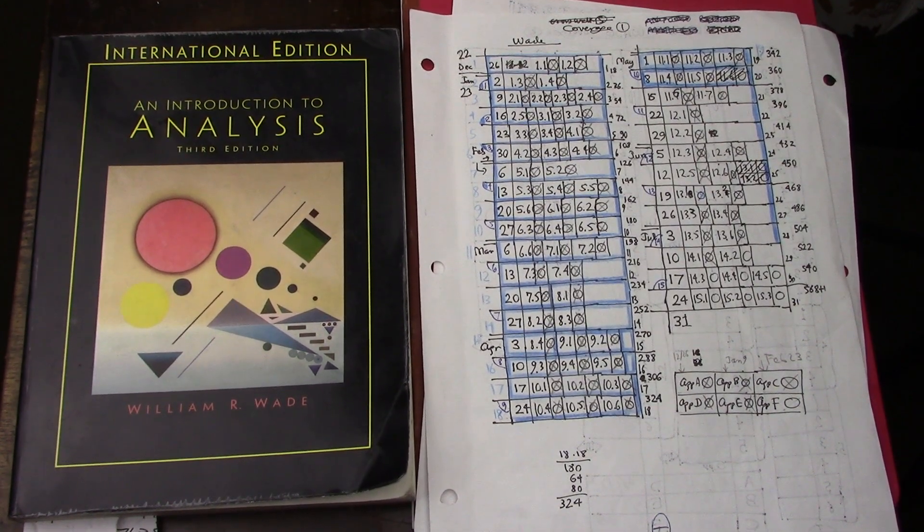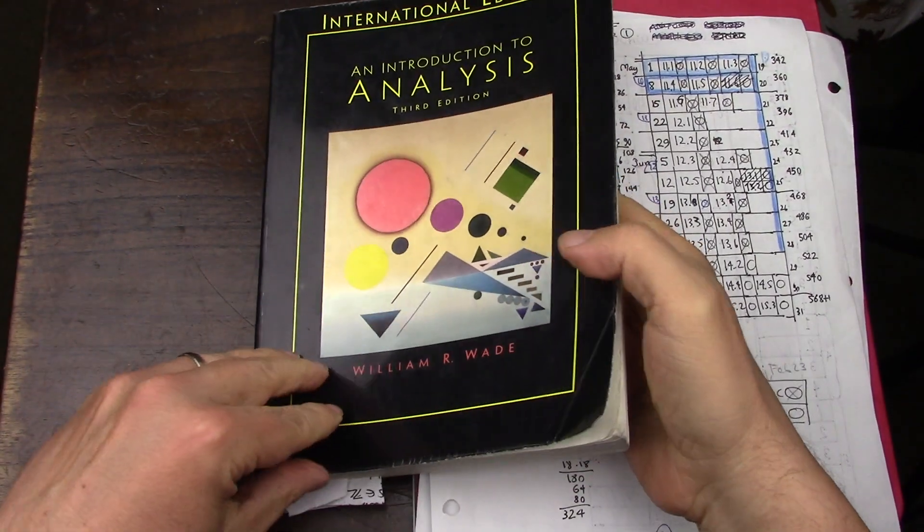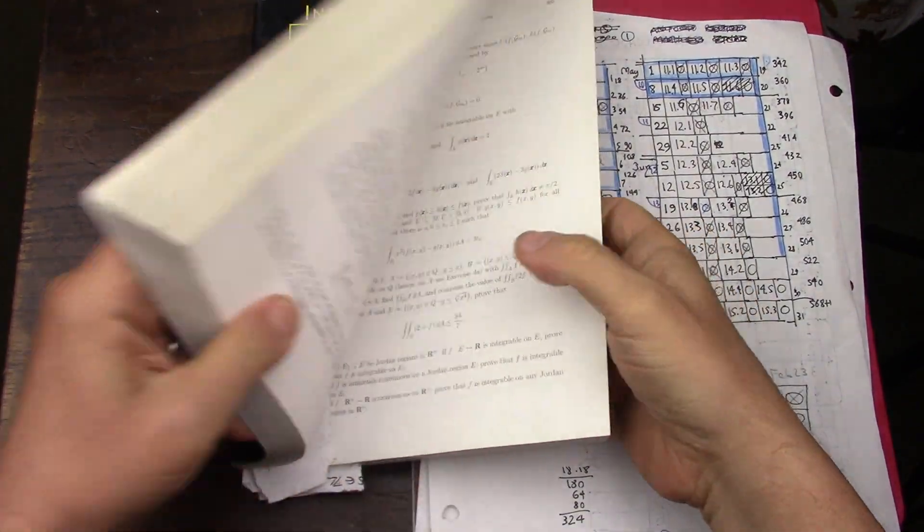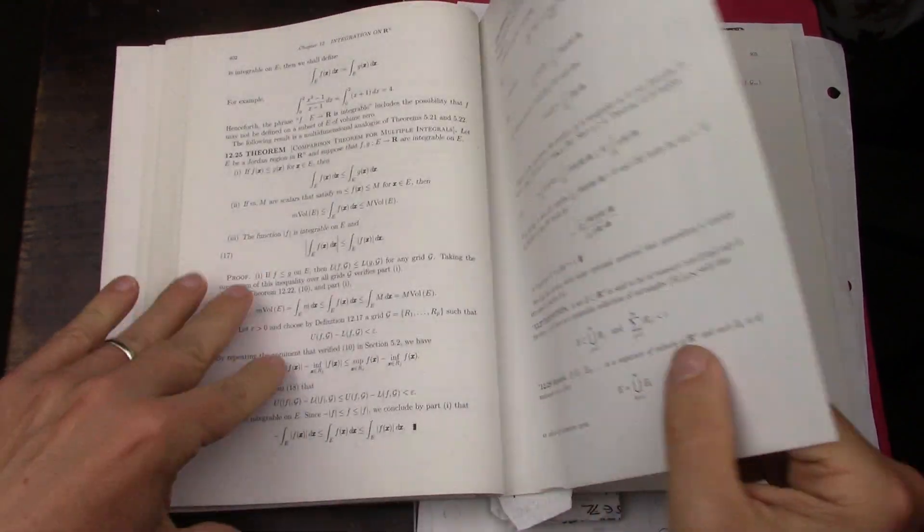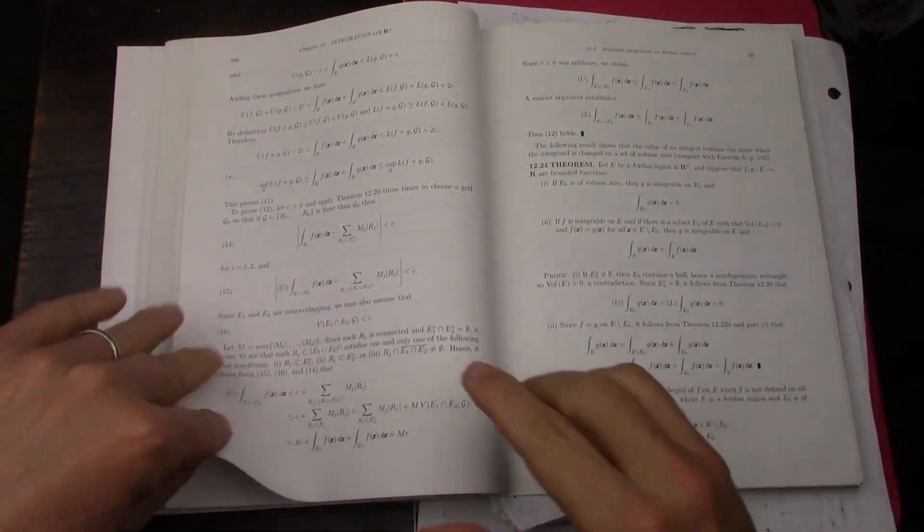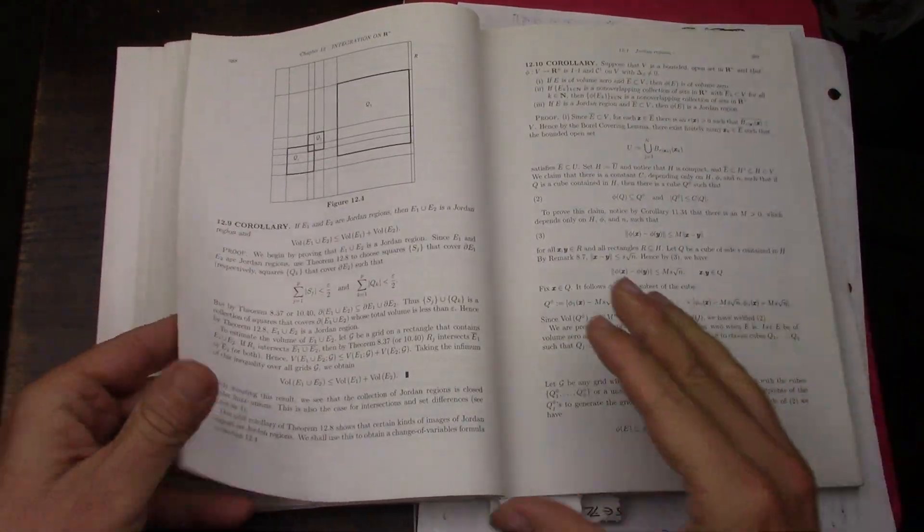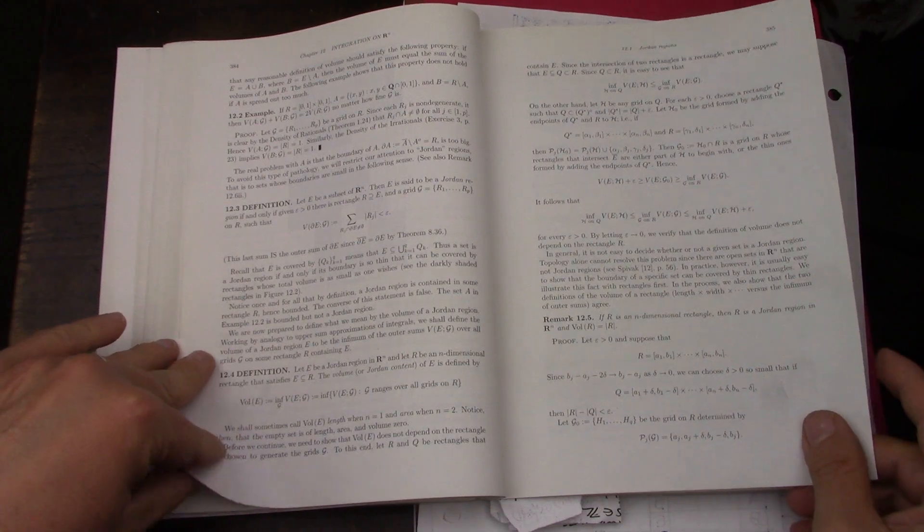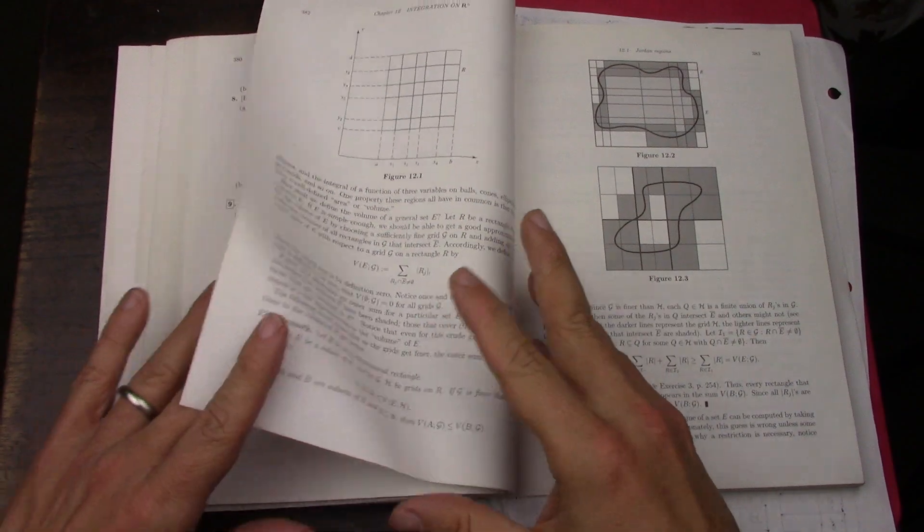I continue to get closer to finishing Wade. This last week I worked on section 12.1 problems on R^n integration. In the case of Wade, it is done using Jordan regions.